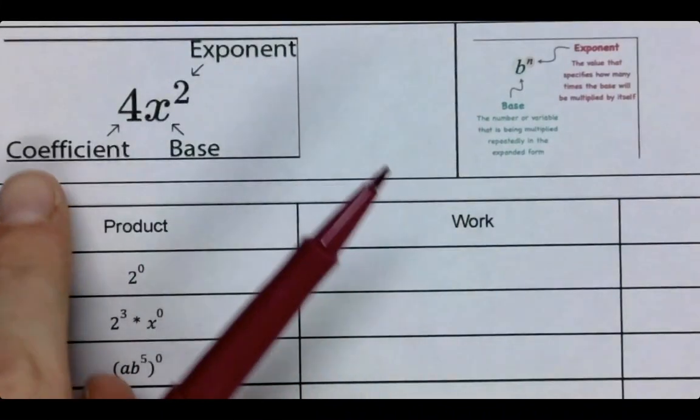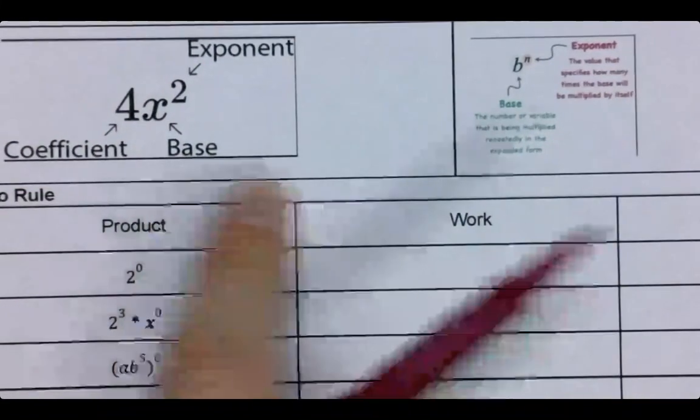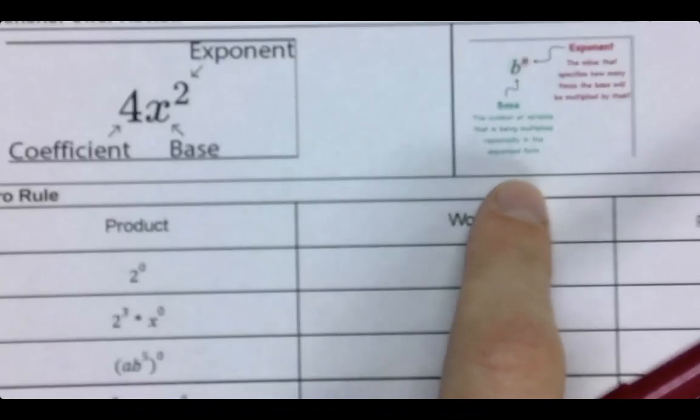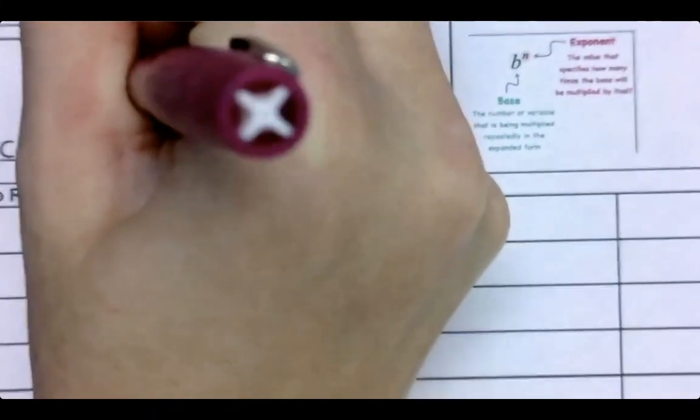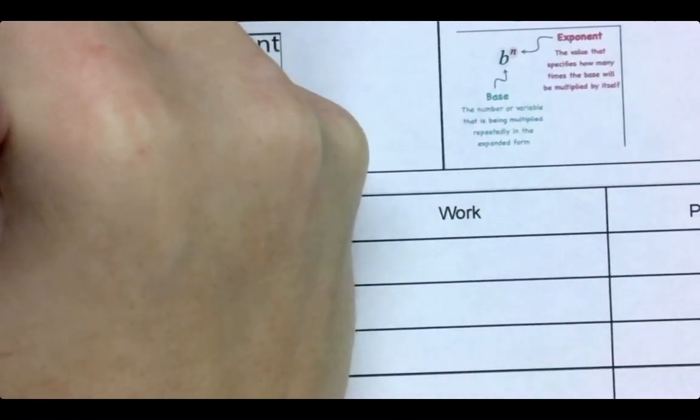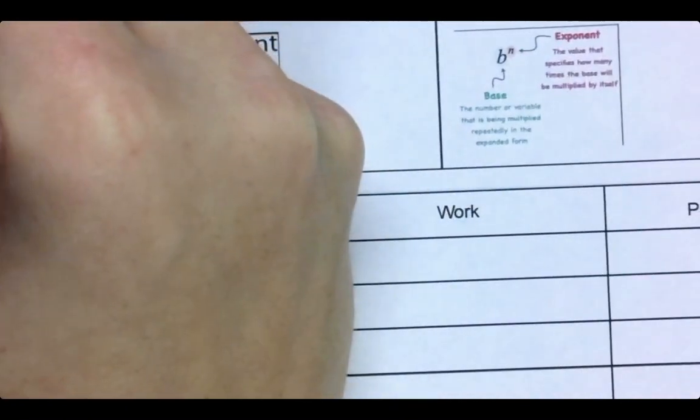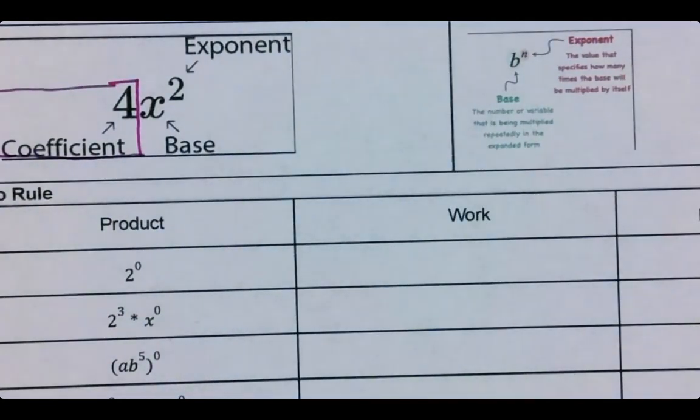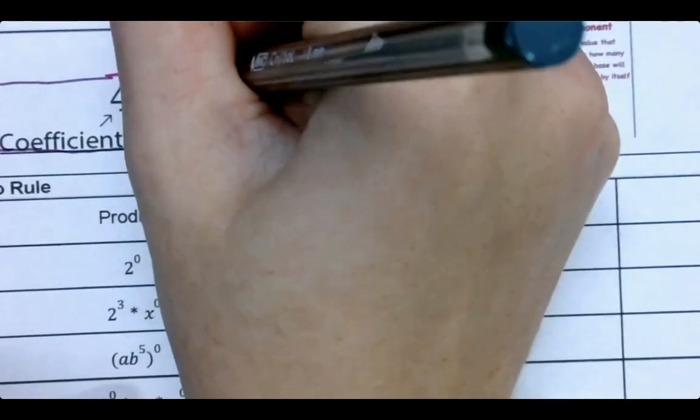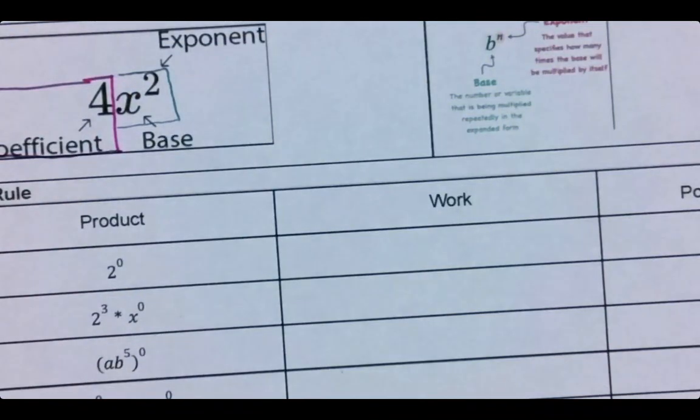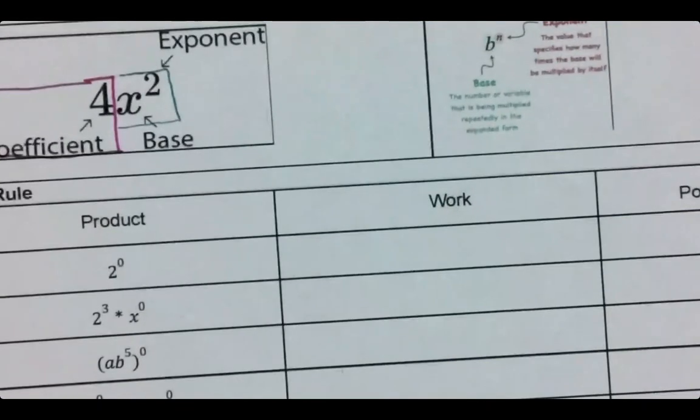Just a reminder of base, the coefficient, the exponent, and all that stuff. Remember the biggest thing here is the four, right, is called the coefficient. Its exponent is not 2. The x's exponent is 2. They are two separate things. Remember to keep that in mind as we go through what we're doing today.